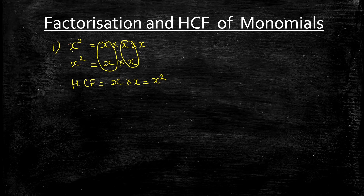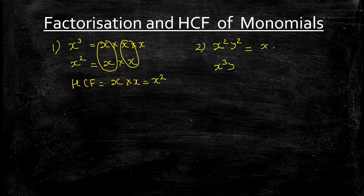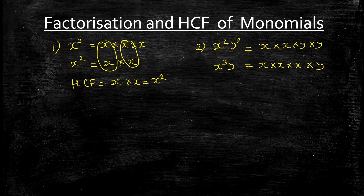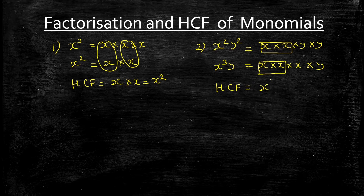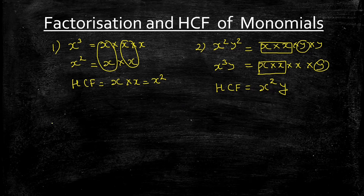Let's try another example: x²y² and x³y. The factors of x²y² are x × x × y × y, and x³y is x × x × x × y. For x: the lowest power between x² and x³ is x². For y: the lowest power between y² and y is y. So the HCF is x²y.